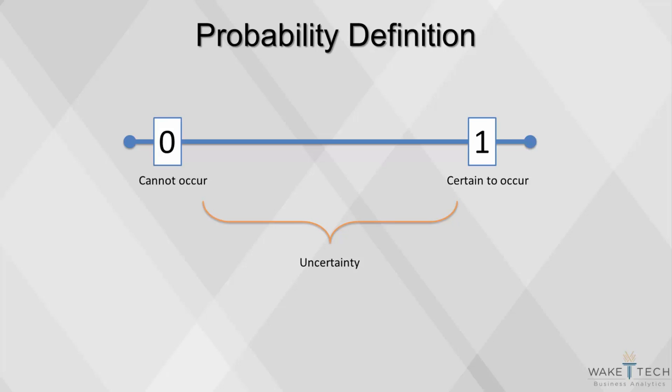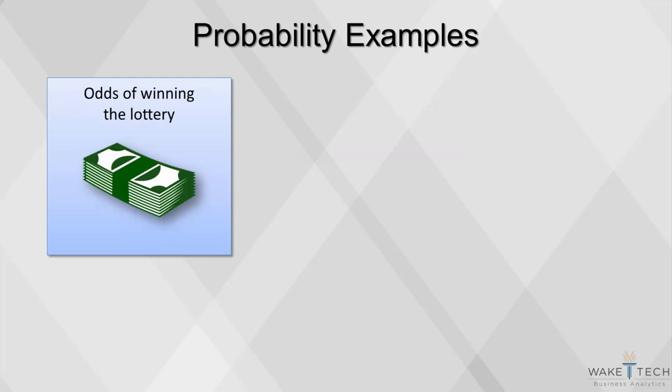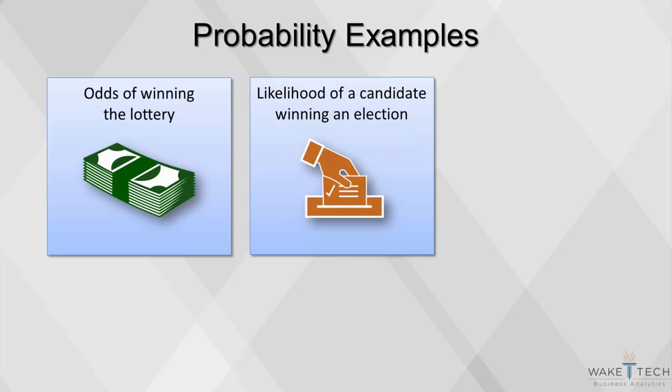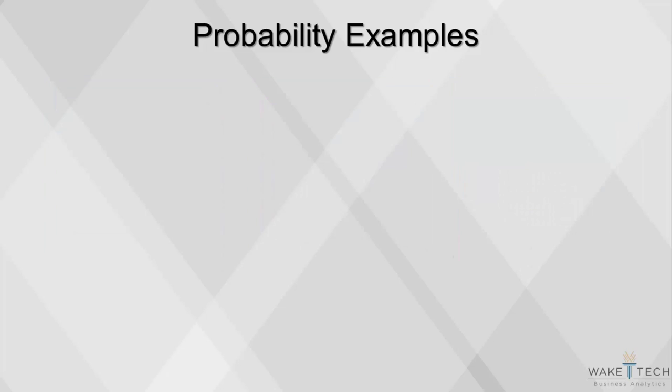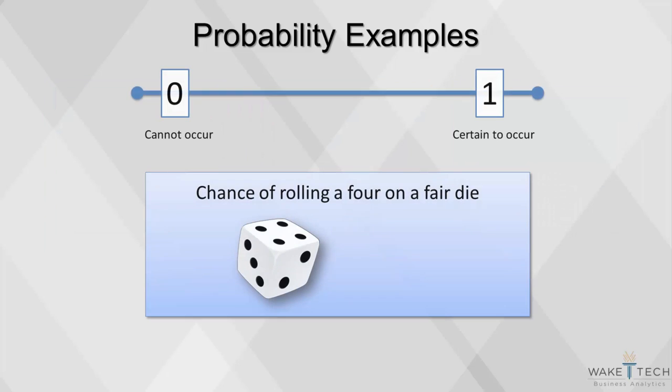Here are some examples: the odds of winning a lottery, the likelihood of a particular candidate winning an election, or the chance of rolling a 4 on a fair die. In the case of the die, there are 6 sides, so the odds of rolling a 4 are 1 out of 6.